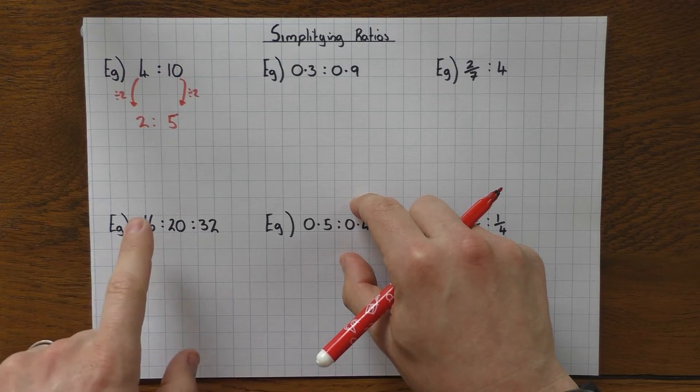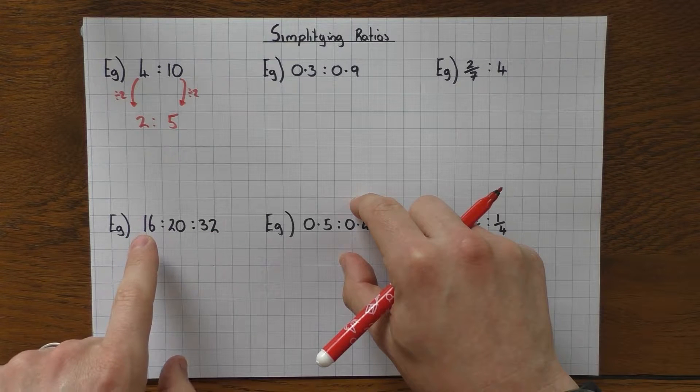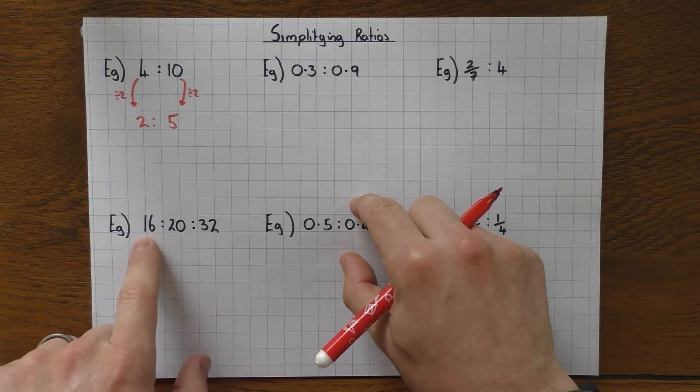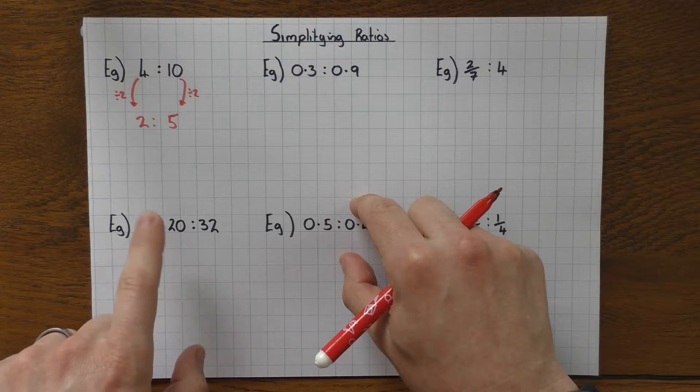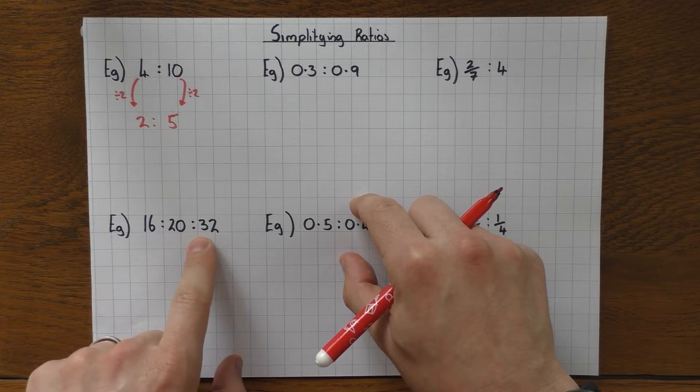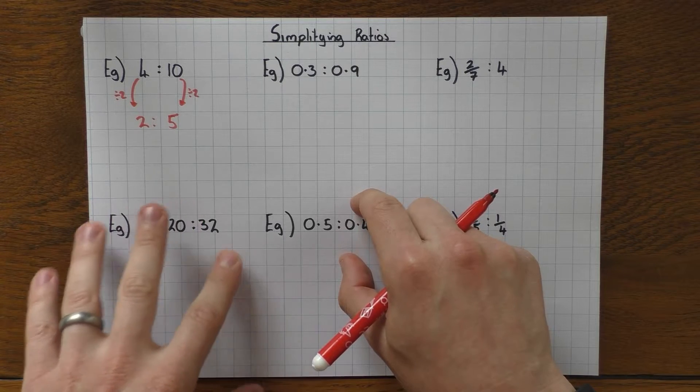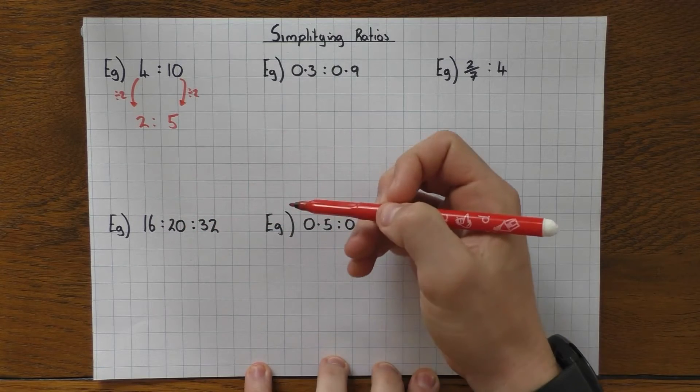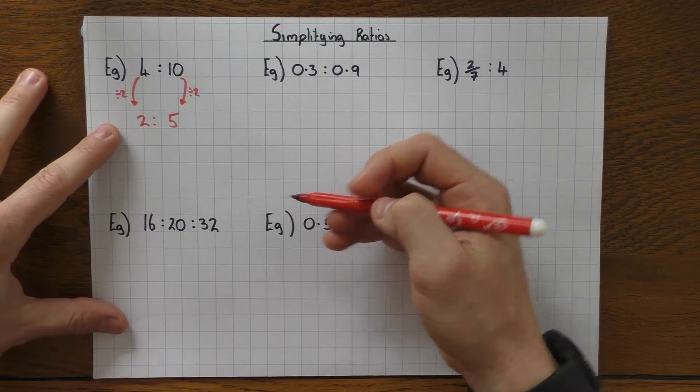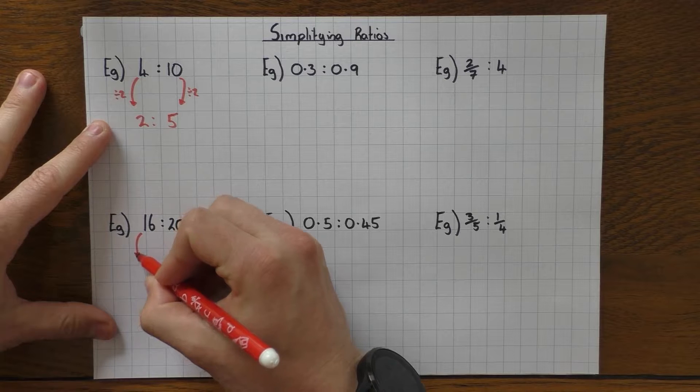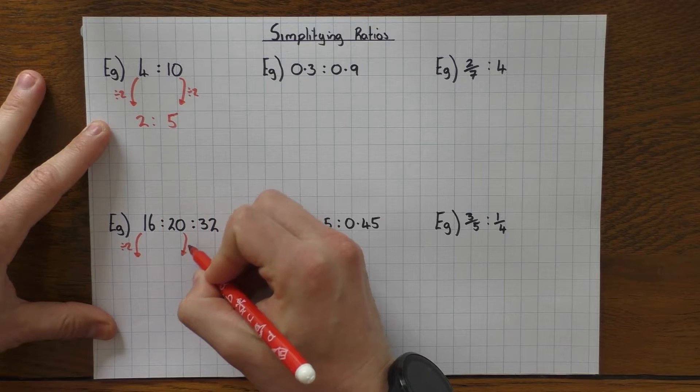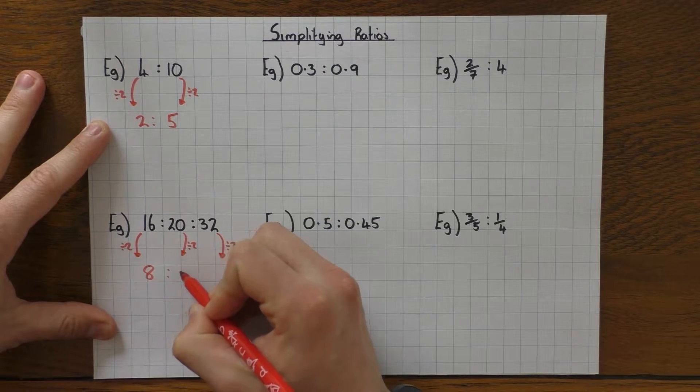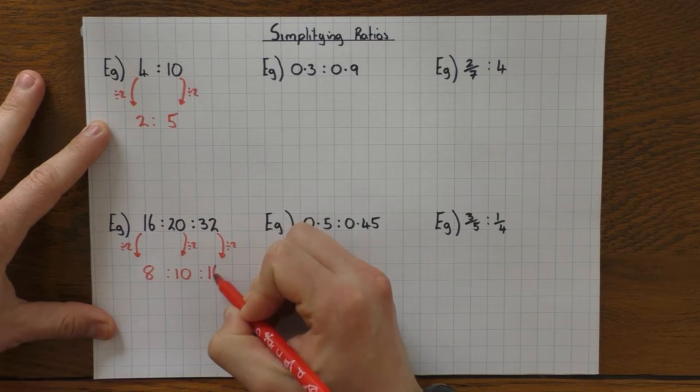Exactly the same thing if we have 3 numbers. If we have 3 numbers, we're still after a common factor, but this time of all 3 numbers, or ideally the highest common factor. So you might already be able to spot the highest common factor is 4. So you divide 16 by 4, 20 by 4, and 32 by 4. That's absolutely fine. I'm just going to show you that if you can't spot the highest common factor, it's not an issue. So what most people will do is they'll go, they're all even numbers, and I can half them, which is absolutely fine. So let's do that step. Divide by 2, divide by 2, and divide by 2. So I will have 8, 10, and 16.